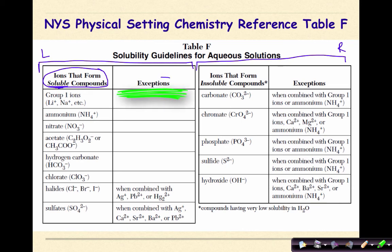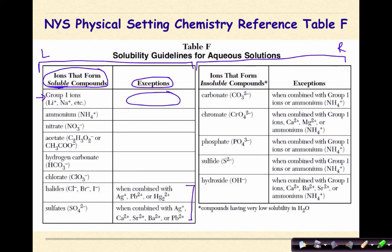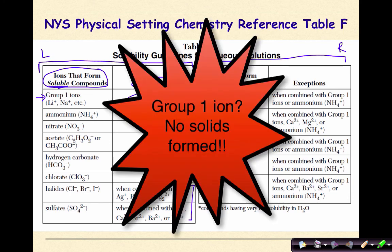Any of these ions in the exceptions column, if combined with any of the ions in the far left column, will form insoluble compounds. Group one ions, which include examples like lithium and sodium — basically anything in group one — if those ions are in your compound, it's going to dissolve in water. There are no exceptions to the rule. Anything with a group one ion will be soluble and will not form a solid.